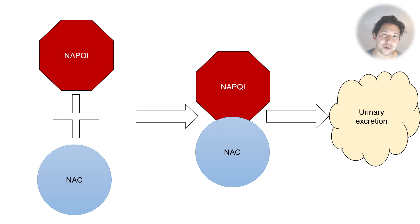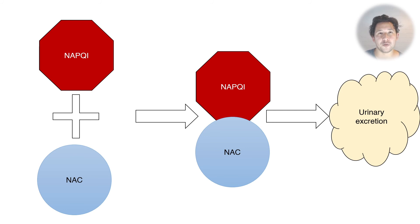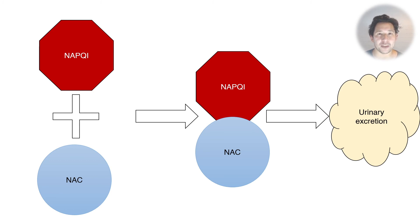But apart from that being the actual truth of what happens, this is what I want you to have in your head: that NAC basically serves as a glutathione substitute and allows you to deal with the NAPQI in a way that is harmless, so it can be excreted without causing damage to the hepatocytes by covalently binding to them.